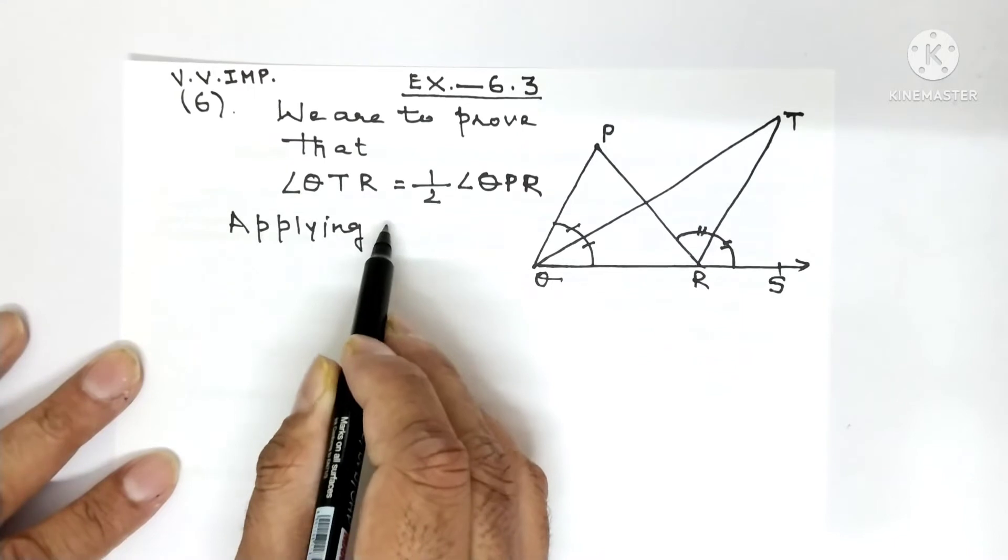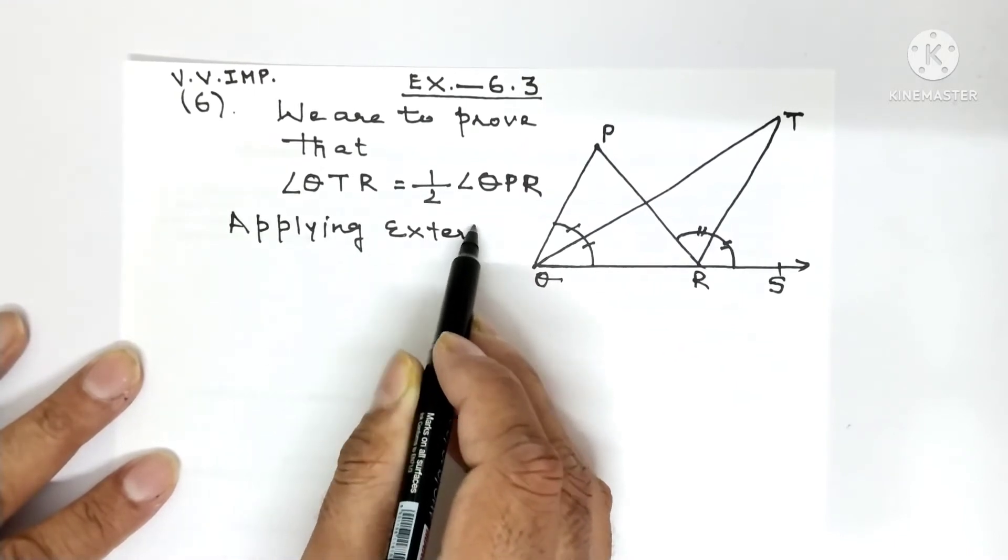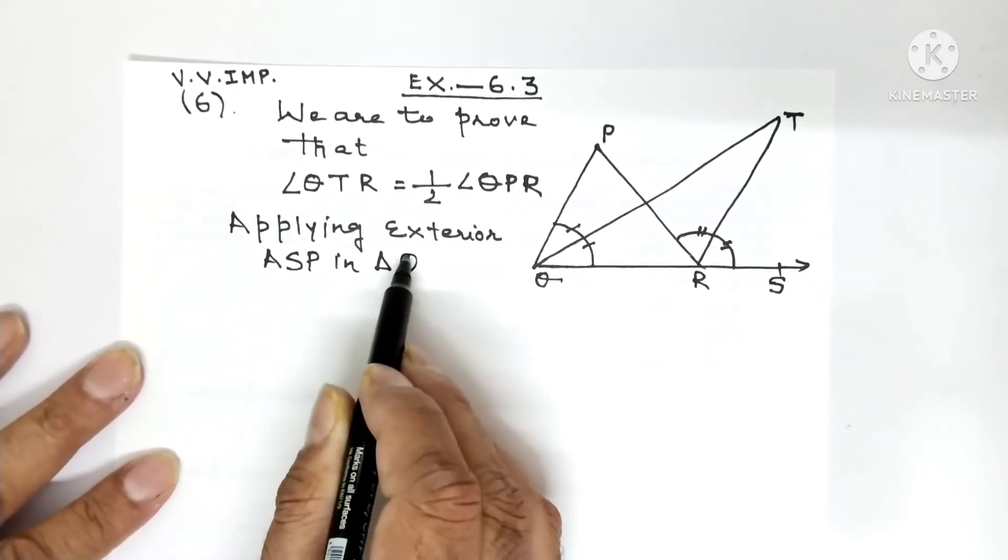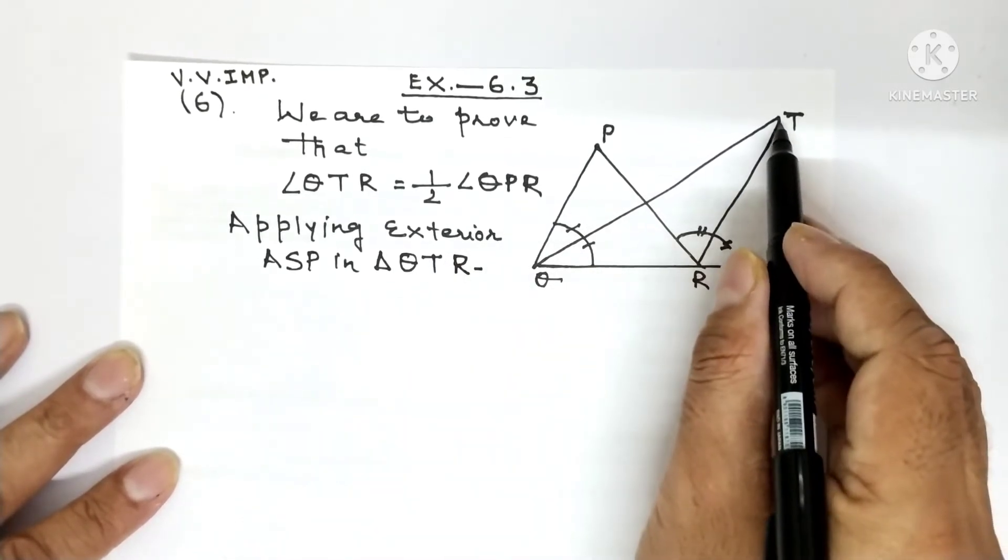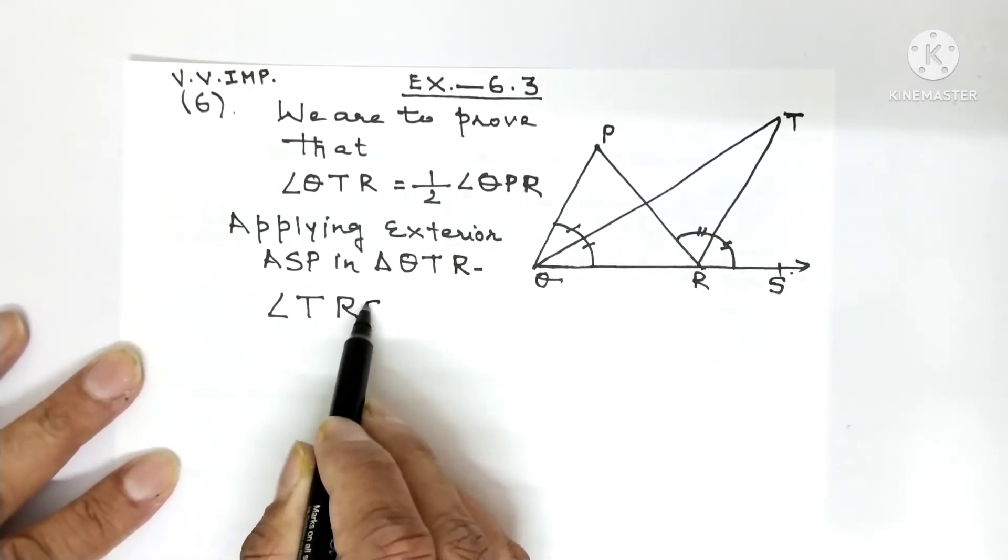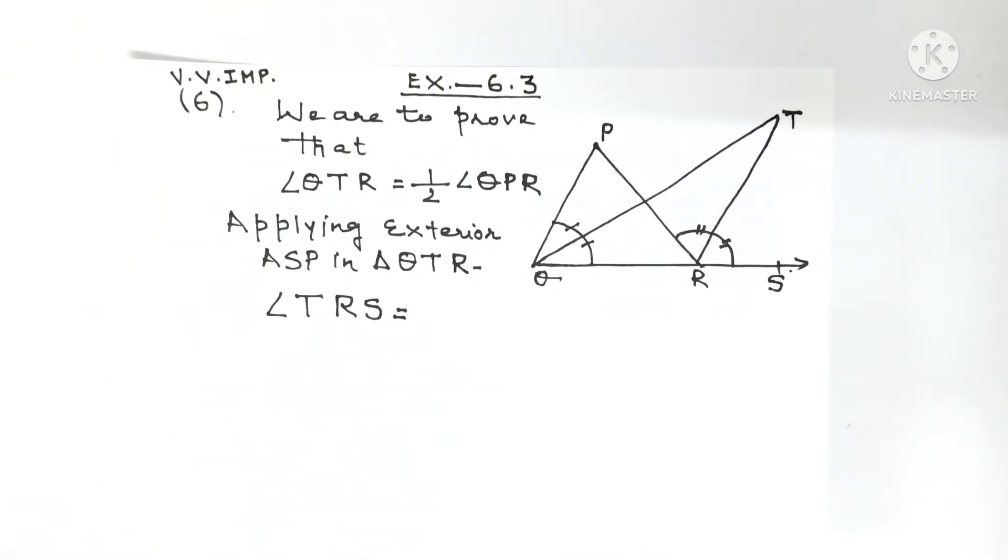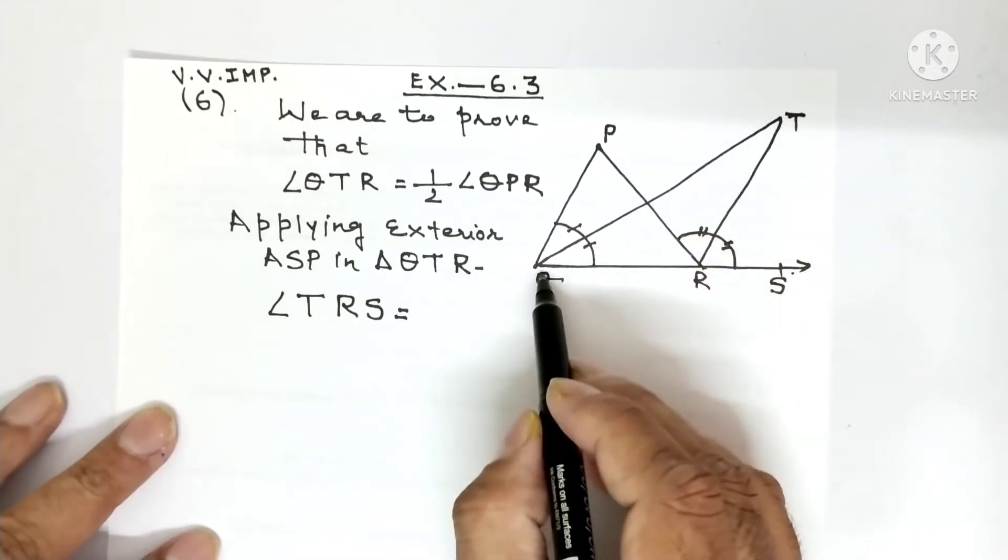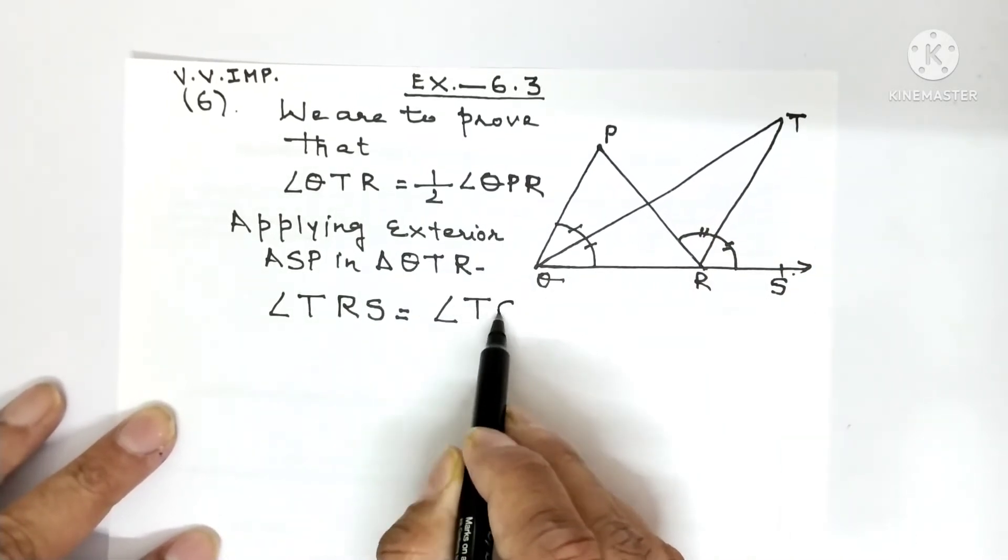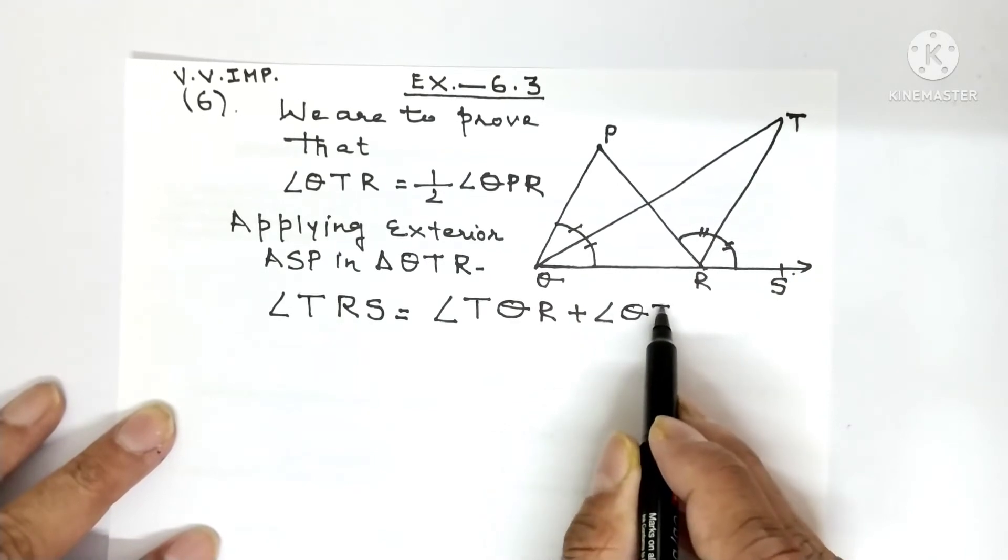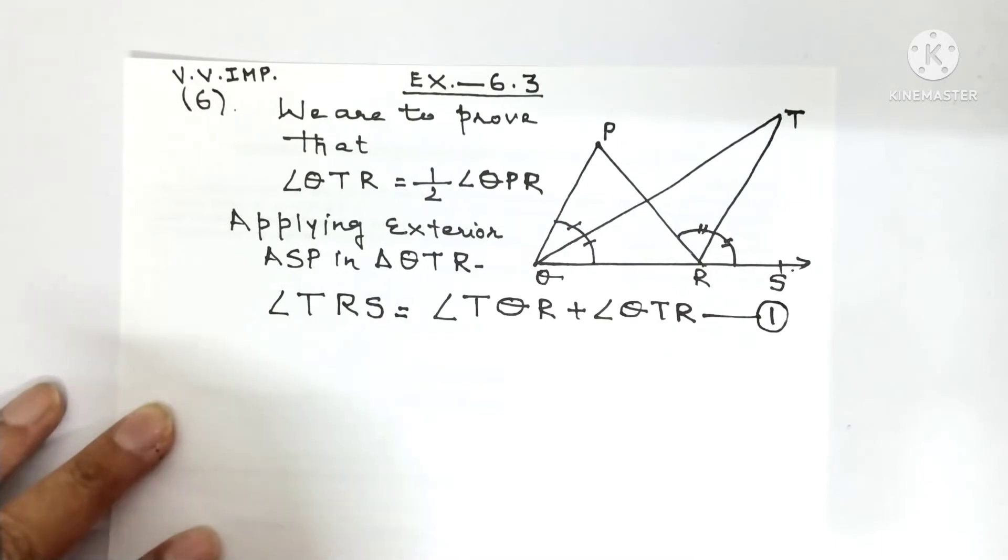Applying exterior angle sum property in triangle QTR. If we apply exterior angle sum property in QTR, then you studied in 7th class that in a triangle the exterior angle is equal to sum of the two interior opposite angles. So angle TRS will be equal to angle TQR plus angle QTR, and this you can give equation number 1.